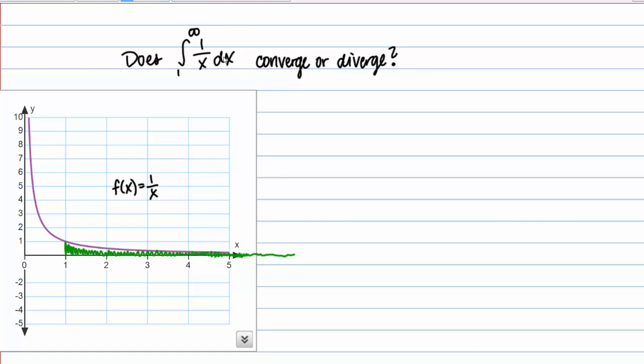So how do we evaluate an improper integral? So the integral from 1 to infinity of 1 over x dx equals, so what I'm going to do is I'm going to make this the limit from 1 to a. You can use any variable here to replace that infinity.